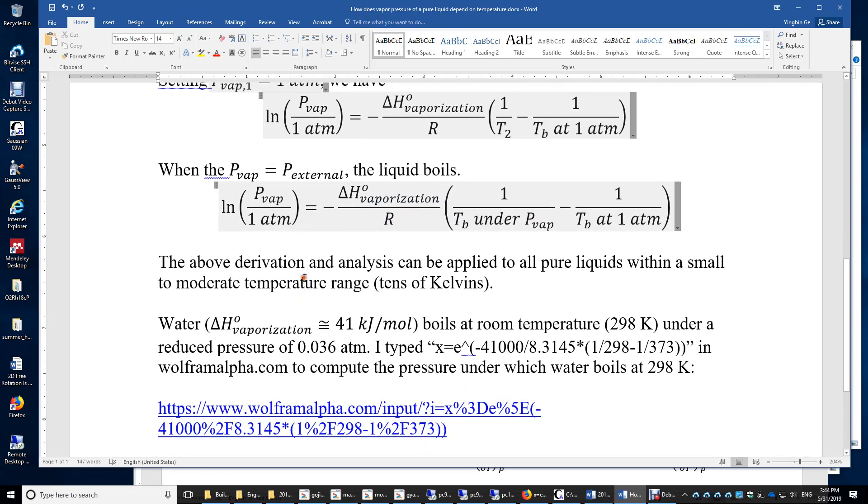I'm going to give you an example of water. The enthalpy of vaporization of water is roughly 41 kJ/mol at 100°C. It's actually 43 kJ/mol or more at room temperature, but 41 and 43 are close enough, so I'm going to use 41 kJ/mol in my calculation.